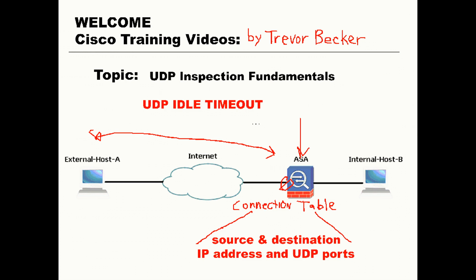Since the ASA has no way to track the state of the packet exchanges in that UDP connection, it has no way to determine when the UDP connection is over. To solve for this, the ASA uses the UDP idle timeout to close connections. The idle timeout is a configurable option, but the default for UDP traffic is two minutes. Once the idle timeout expires, the xlate entry and the connection entry are immediately torn down.